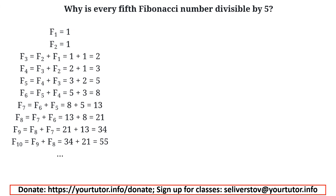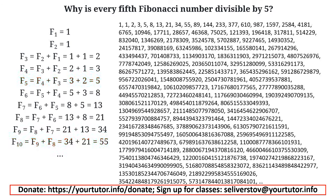Indeed, if you look at what we have already written down, the fifth number is 5, and it is divisible by 5. The tenth is 55, also divisible by 5. For example, here are the first 100 numbers of the Fibonacci sequence, and this property is also fulfilled for all of them.